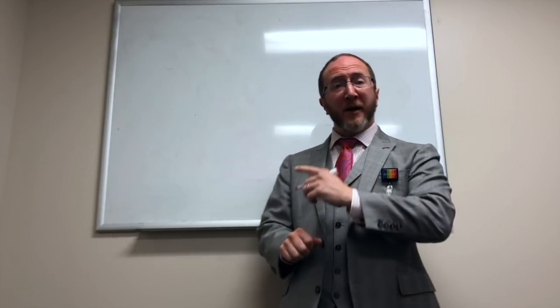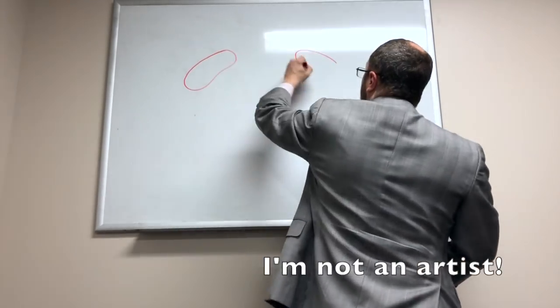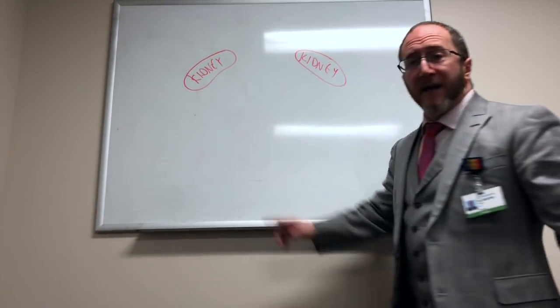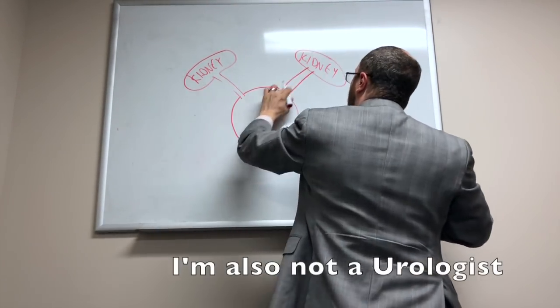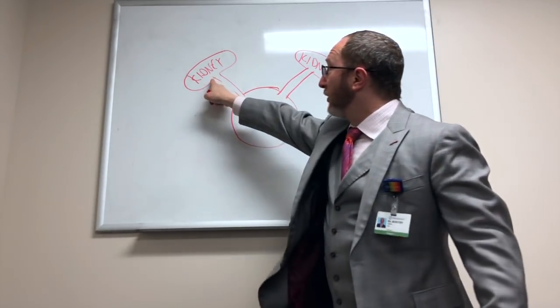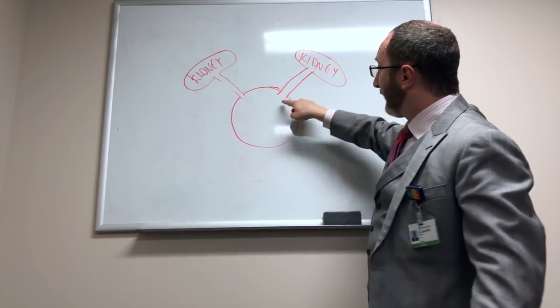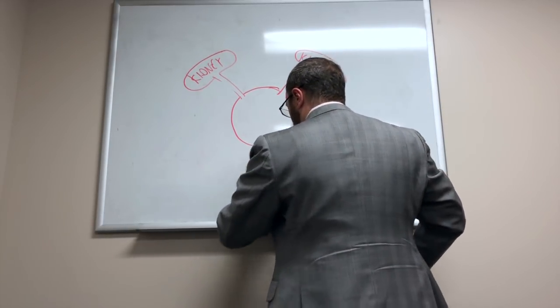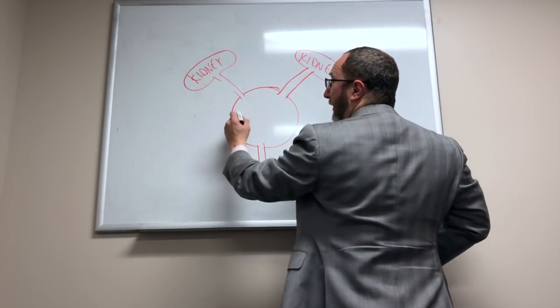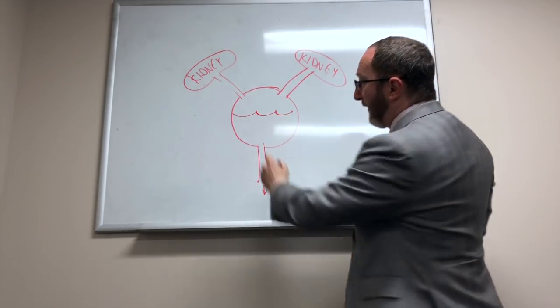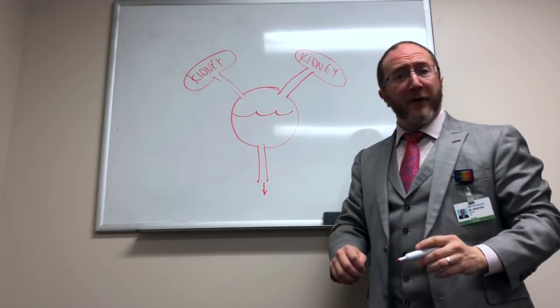I wanted to take a few minutes and talk about the bladder — specifically the anatomy of the bladder — and how it can impact bladder function in MS. I'm going to drop a cartoon bladder. Here you have two kidneys and here's the bladder, with a ureter connecting the kidney to the bladder. Here's the urethra. The kidneys make urine, fill the bladder, and then you expel the urine through the urethra.